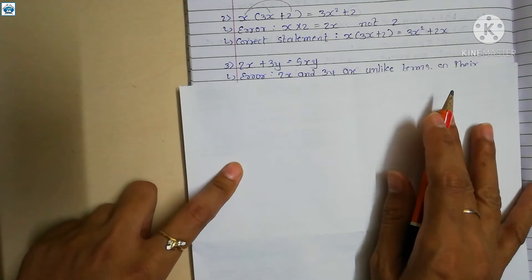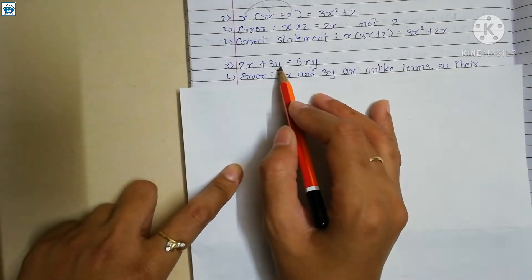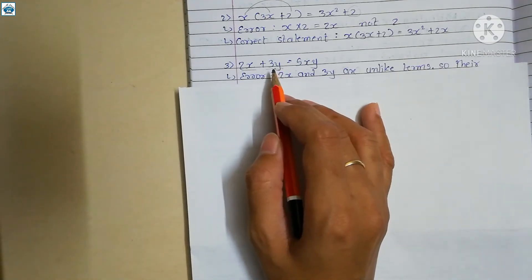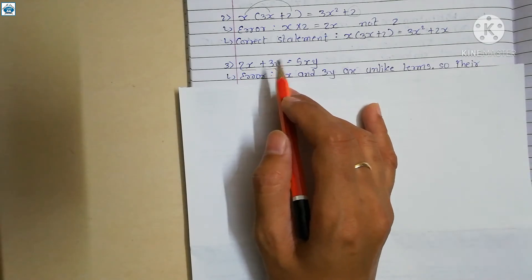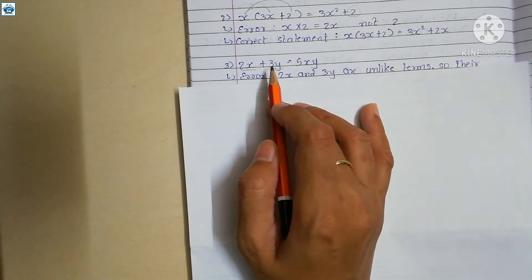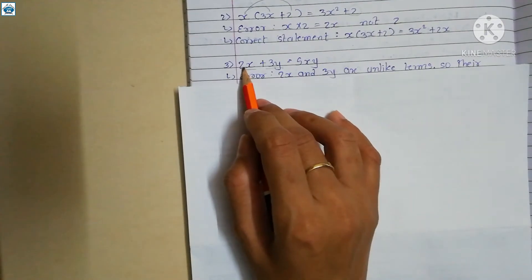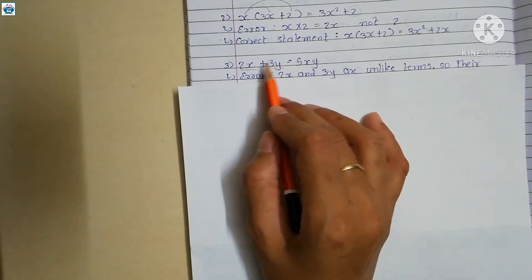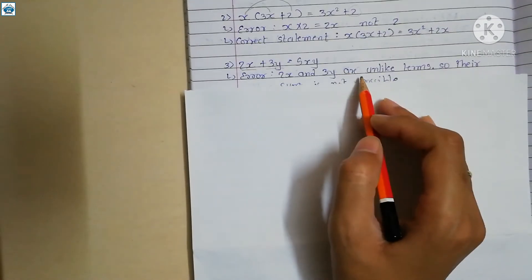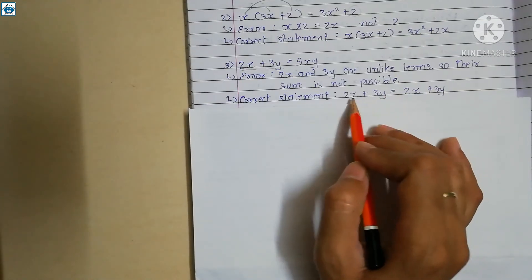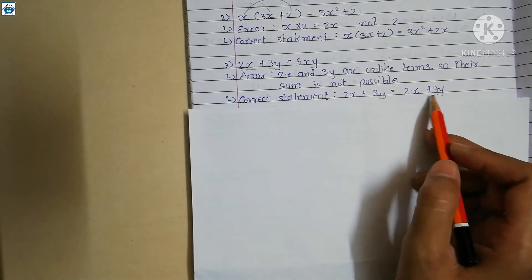The third statement is 2x plus 3y equals to 5xy. Here is an error because x and y are different variables — these are unlike terms. For addition or subtraction, the terms must be like terms. Since 2x and 3y are unlike terms, their sum is not possible. The correct statement is: 2x plus 3y equals 2x plus 3y — it remains as it is.